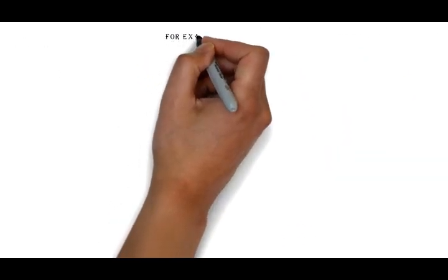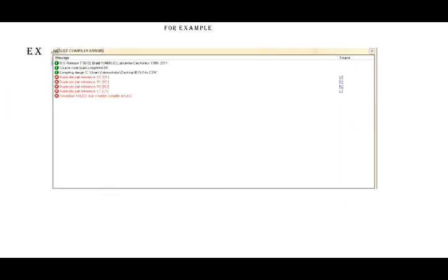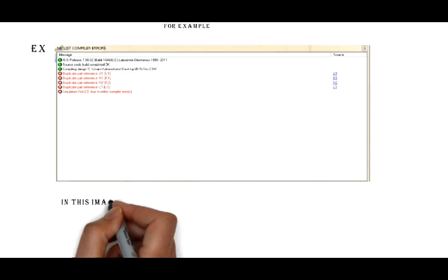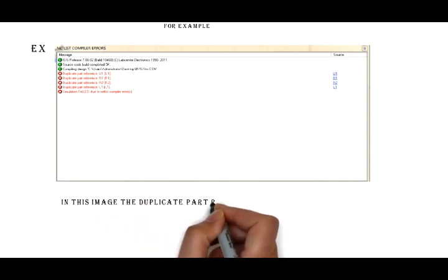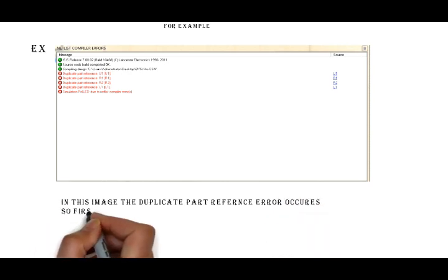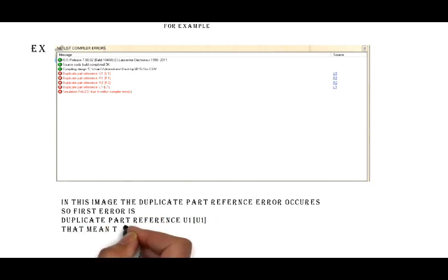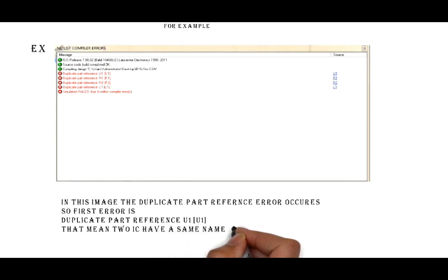For example, in this example, here is a shown image. In this image, the duplicate part reference error occurs. The first error is duplicate part reference U1, U1 — that means two ICs have the same name, which causes the error to occur.